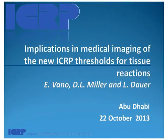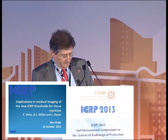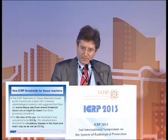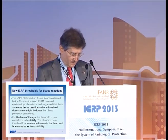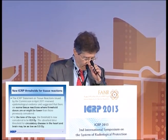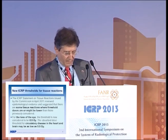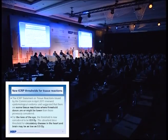I will try to describe or introduce the implications in medical imaging of the new threshold for tissue reactions. The important value of the new threshold for the lens of the eyes is 0.5 grays, and for the circulatory disease in the heart and brain, if doses are higher than 0.5 gray — this is the main aspect of my presentation.